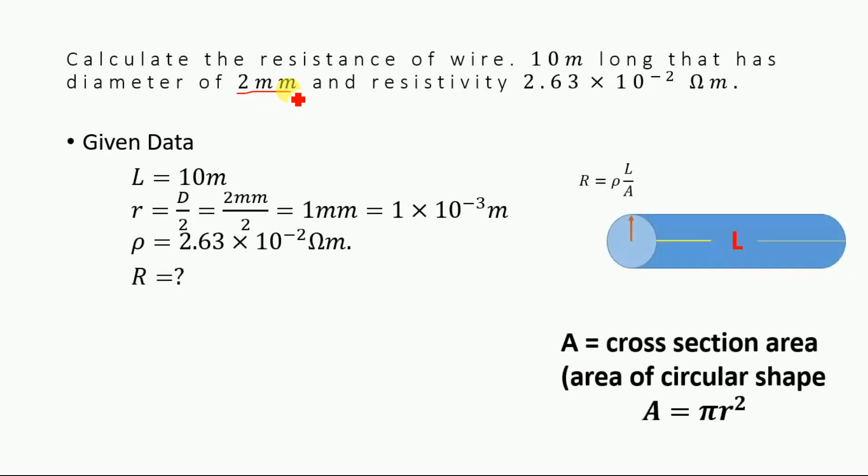Now let's consider this is a wire. This is the length of this wire and this is the radius of the wire. Actually, the diameter is given in the numerical. The radius is not given, but we know that the radius is equal to diameter divided by 2. So the diameter is 2 millimeters. Dividing this 2 millimeters by 2, we will get 1 millimeter, so the radius will be equal to 1 multiplied by 10 to the power minus 3 meters.